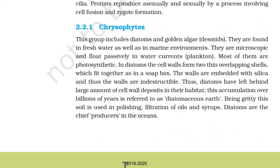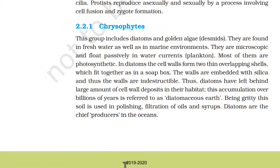2.2.1 Chrysophytes. This group includes diatoms and golden algae. They are found in freshwater as well as marine environments, are microscopic, and float passively in water currents as plankton. Most of them are photosynthetic. In diatoms, the cell walls form two thin overlapping shells which fit together as in a soap box. The walls are embedded with silica and thus are indestructible. Diatoms have left behind large deposits of cell walls in their habitat — this accumulation over billions of years is referred to as diatomaceous earth. Being gritty, this soil is used in polishing, filtration of oil, and syrups. Diatoms are the chief producers in the ocean.